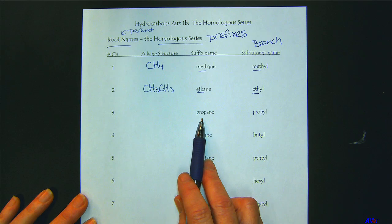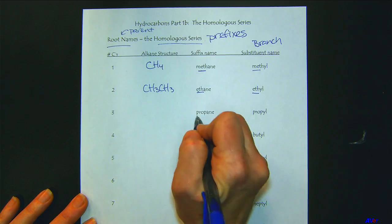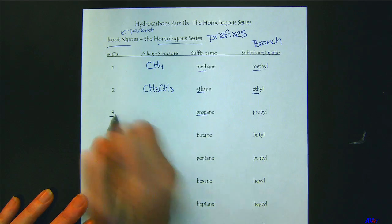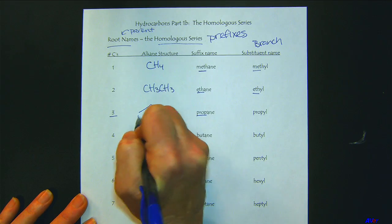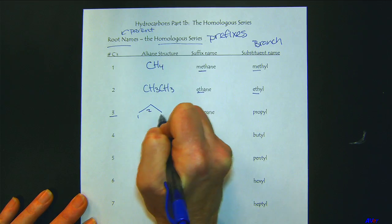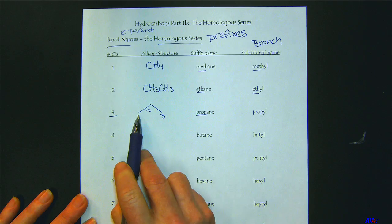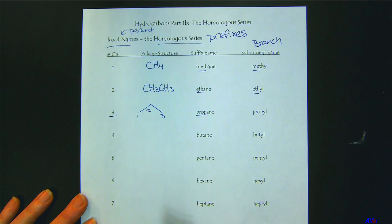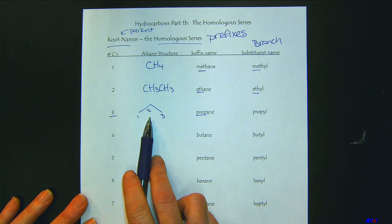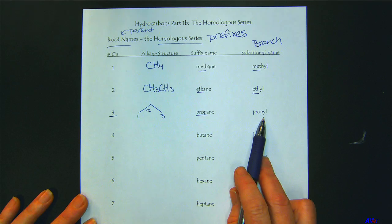Now I'm going to switch to bond line structures. 'Prop' tells us we have three carbons — the end of every line and every corner is a carbon. There's our propane, and if it was a branch, propyl.